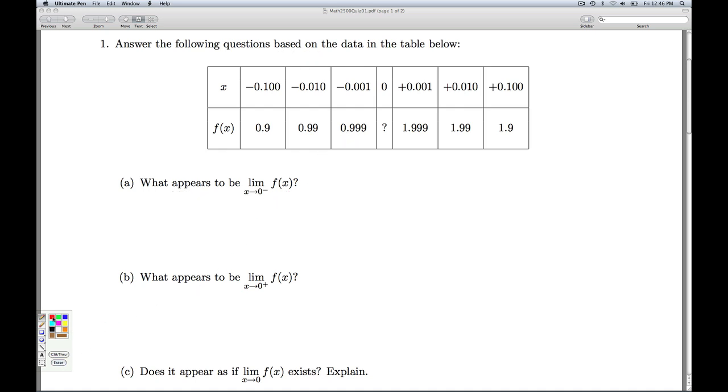Part B now, what appears to be the limit as x approaches 0 from the right? So now we want to plug in numbers a little bit bigger than 0. That's these guys. So these are the numbers as x approaching 0 from the right, 0.1, 0.01, 0.001.